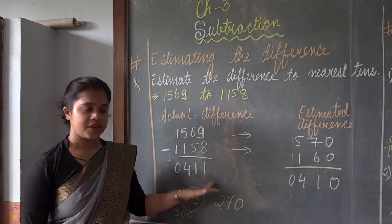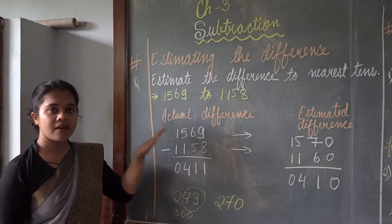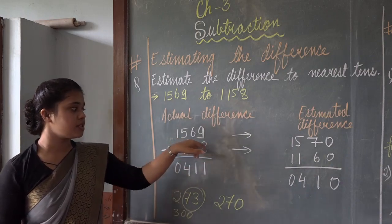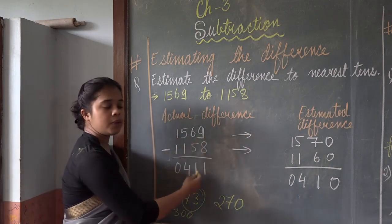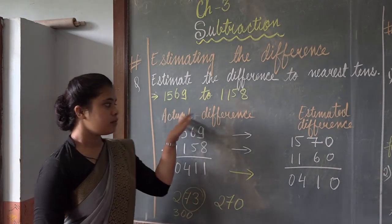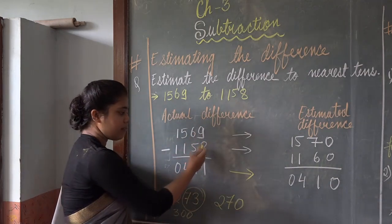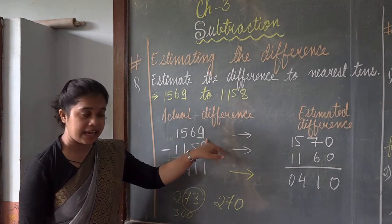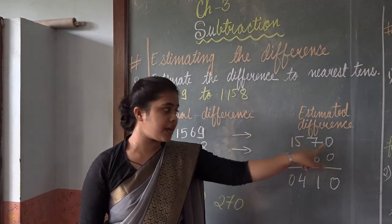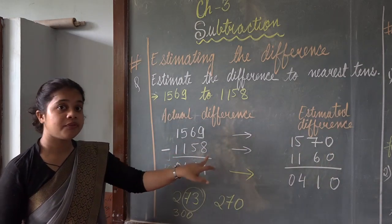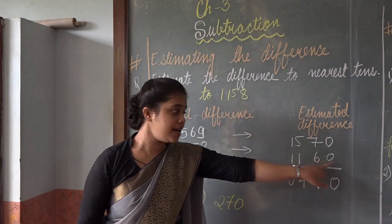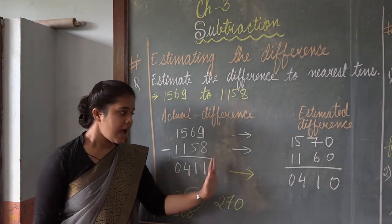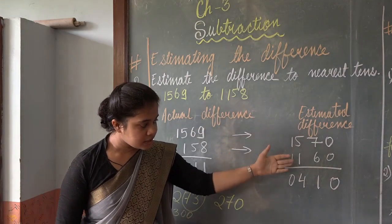Now let us move on to the question. You have to estimate and find the difference — subtract 1,158 from 1,569. First of all, we will estimate to nearest tens. So 1,569 rounded to nearest tens is 1,570, and 1,158 rounded to nearest tens is 1,160. The actual difference of these two numbers is 411.